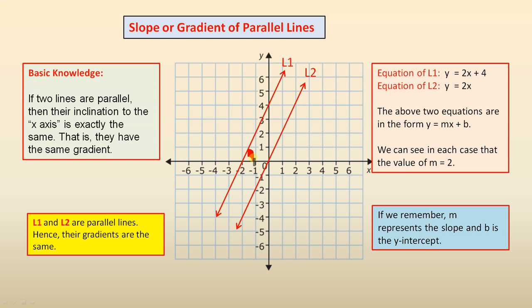Now here is the inclination there, and the inclination there. So what we're saying is, if that angle equals that angle, these two lines are parallel, hence they have the same gradient.